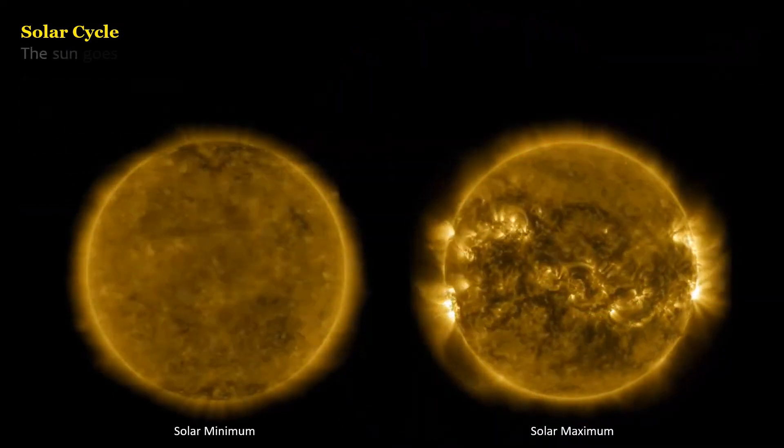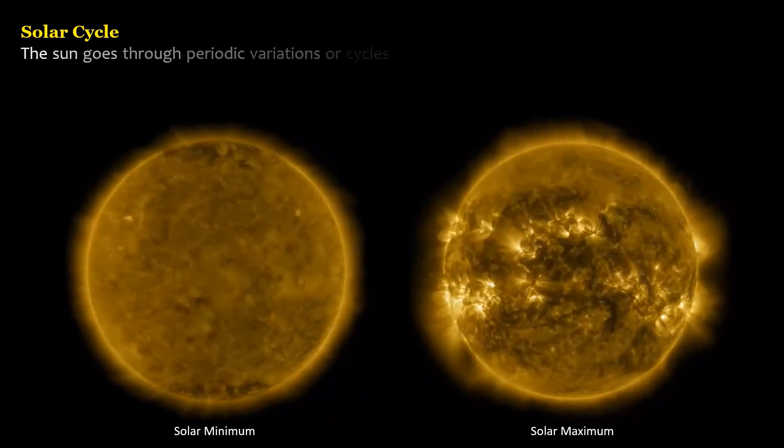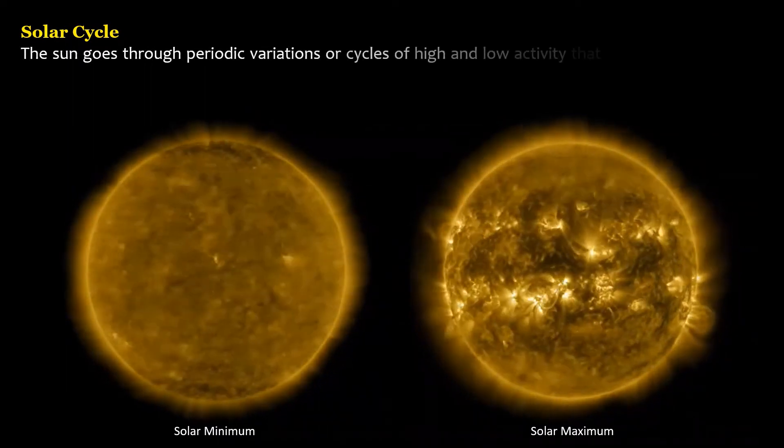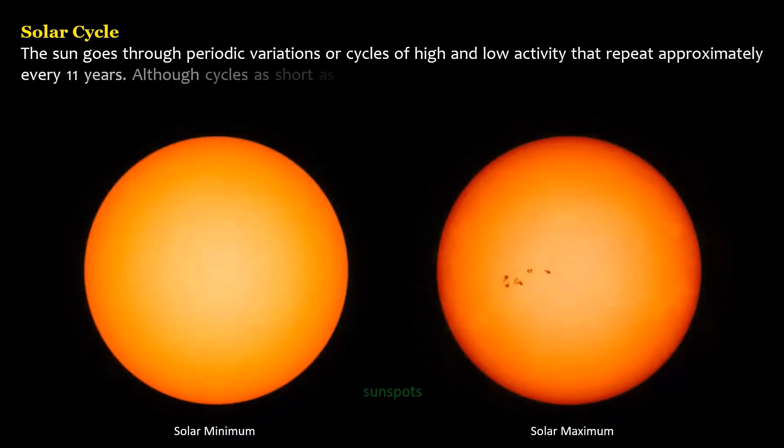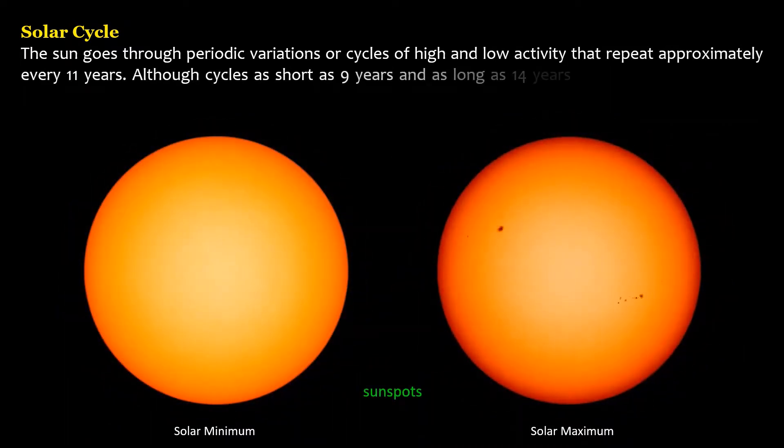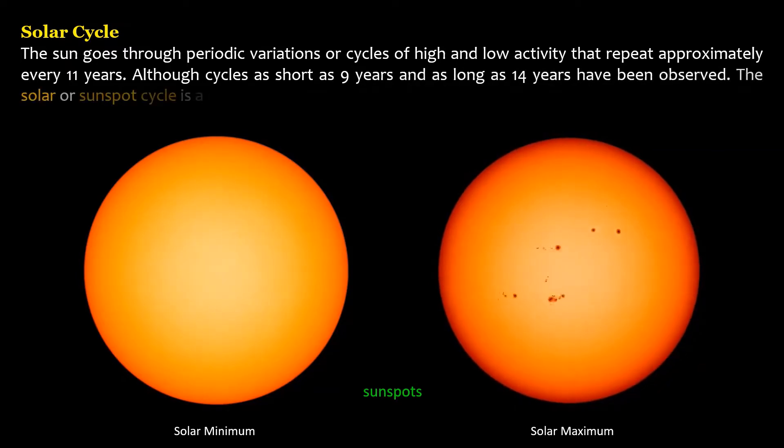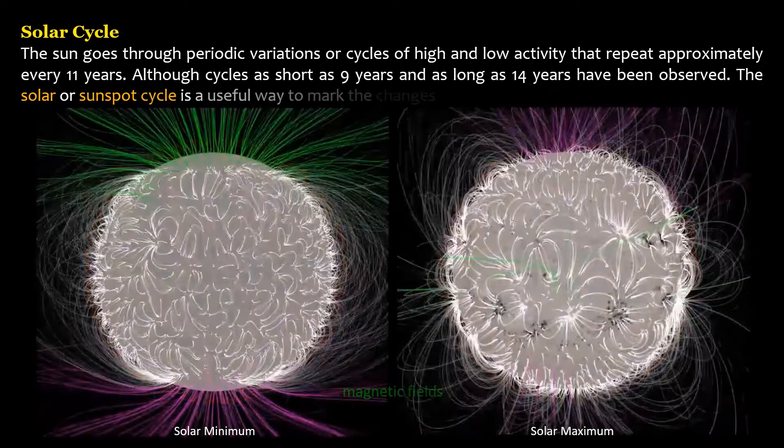The sun goes through periodic variations or cycles of high and low activity that repeat approximately every 11 years, although cycles as short as 9 years and as long as 14 years have been observed. The solar or sunspot cycle is a useful way to mark the changes in the sun.